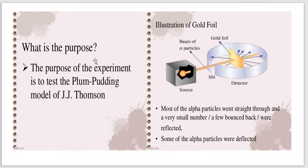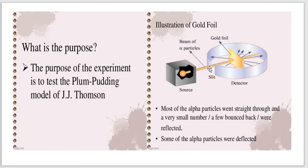The experimental arrangement is as follows. Alpha particles are emitted by some radioactive material. There is a lead screen with a small hole in it, which collimates the alpha particles into a beam. This beam is then allowed to fall on a thin gold foil.